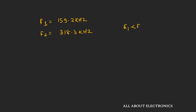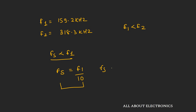Since F1 < F2, for proper differentiation the input signal frequency Fs should be less than F1 = 159.2 kHz. For accurate differentiation, Fs should be at least 10 times less than F1, so Fs should be less than 15.9 kHz.